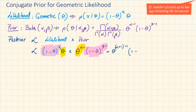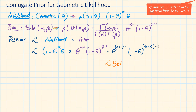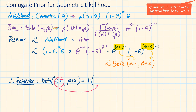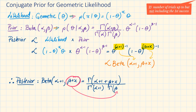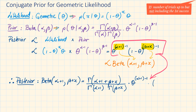Simplifying as before, this is proportional to a beta distribution with parameters α+1 and β+x. Replacing these parameters gives us the complete posterior distribution. We have now proven that the beta is a conjugate prior for a geometric likelihood in both scenarios.